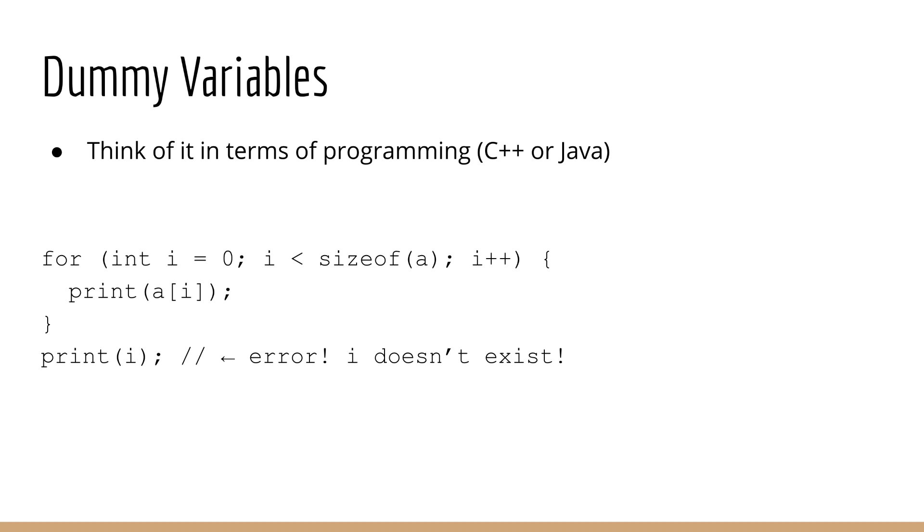Another way to think about this is in terms of programming. Unfortunately, you have to know some C++ or Java to understand this example, since it doesn't really apply to Python. We can see here just a simple for loop where we print each element of an array. When we're done, we try to print the value of i. Unfortunately, this doesn't work because the variable i does not exist outside the for loop. It's just a dummy variable that exists inside the for loop.